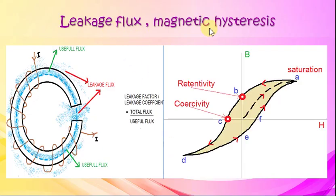Leakage Flux and Magnetic Hysteresis. In order to study leakage flux, take a toroid. Flux through its core is useful flux. Flux leaked from core is the leakage flux. Leakage flux is the total flux divided by useful flux.